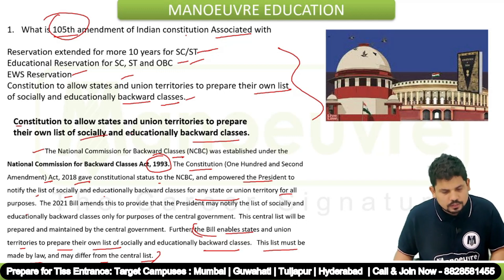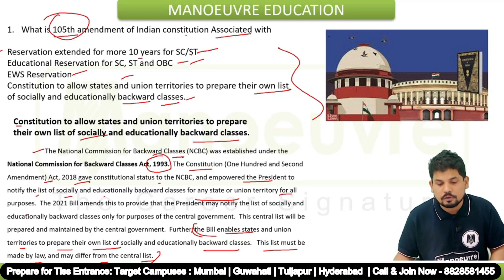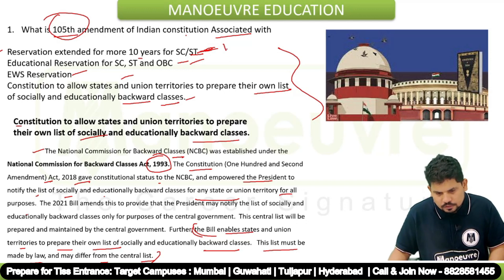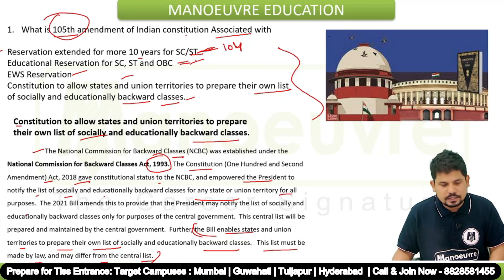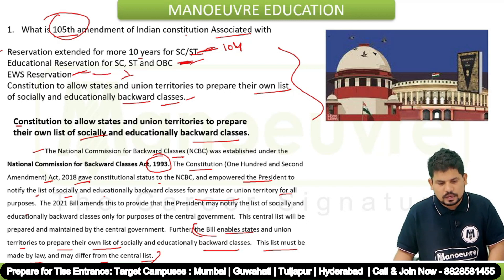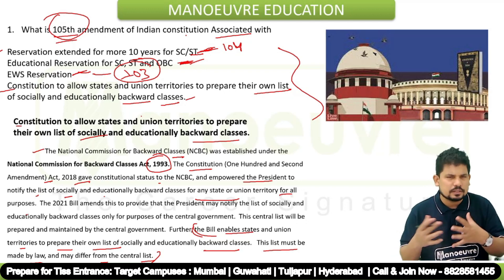To summarize the key amendments: the 105th Amendment allows states and union territories to prepare their own backward classes list; the 104th Amendment extended reservation for SC/ST for more than 10 years; the 103rd Amendment covers EWS (Economically Weaker Section) reservation. Remember these amendment numbers for the exam.